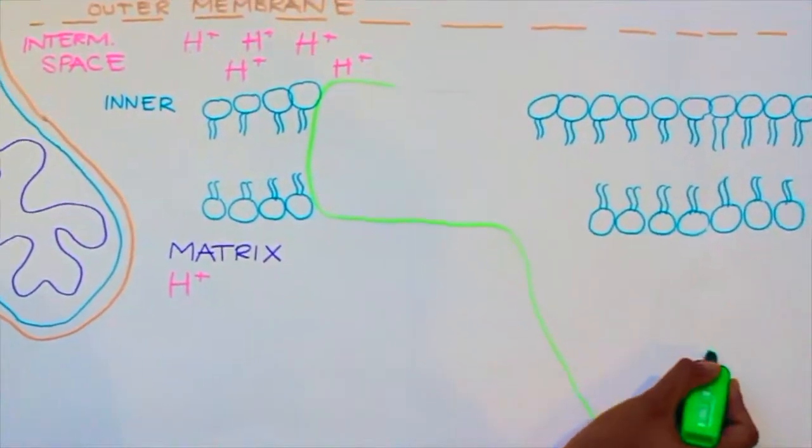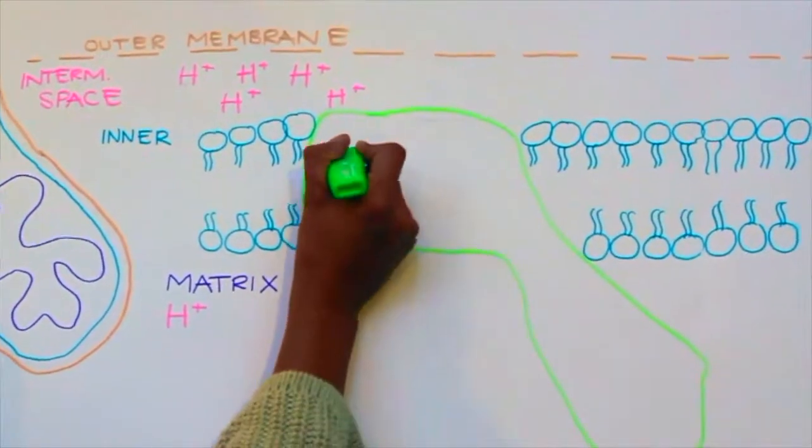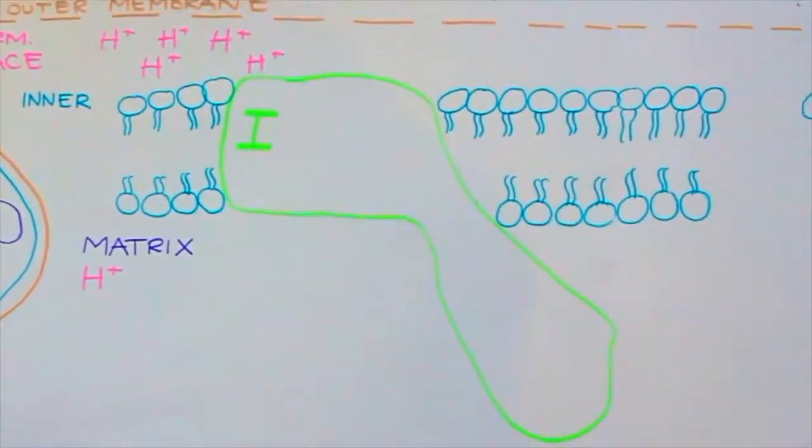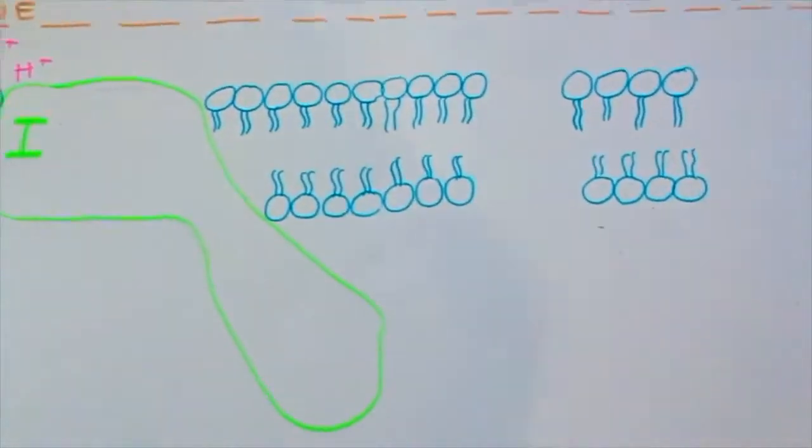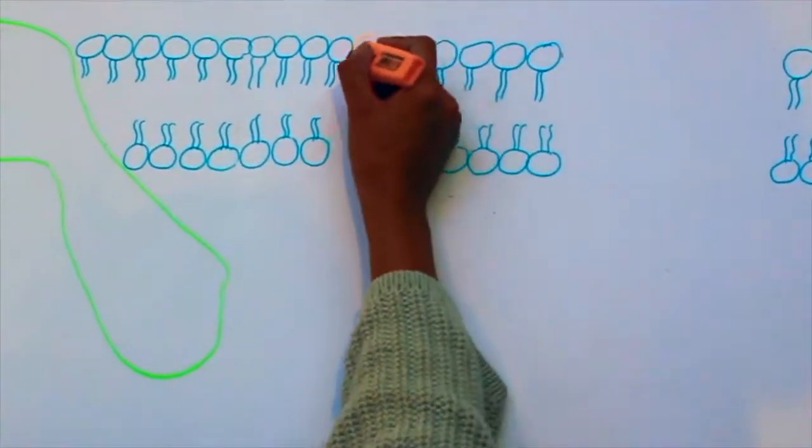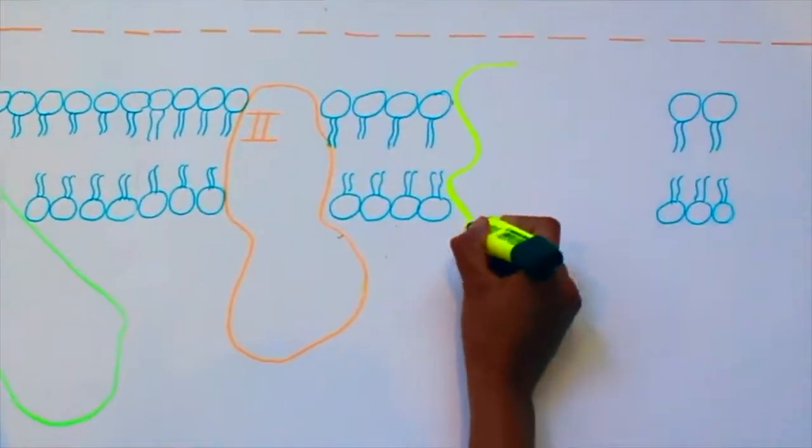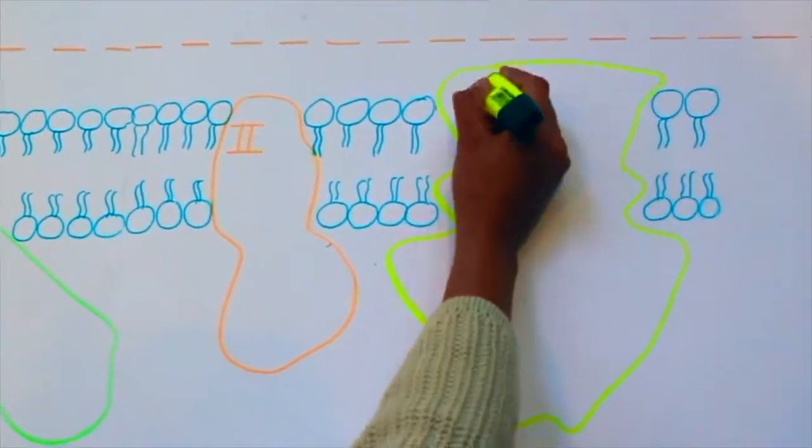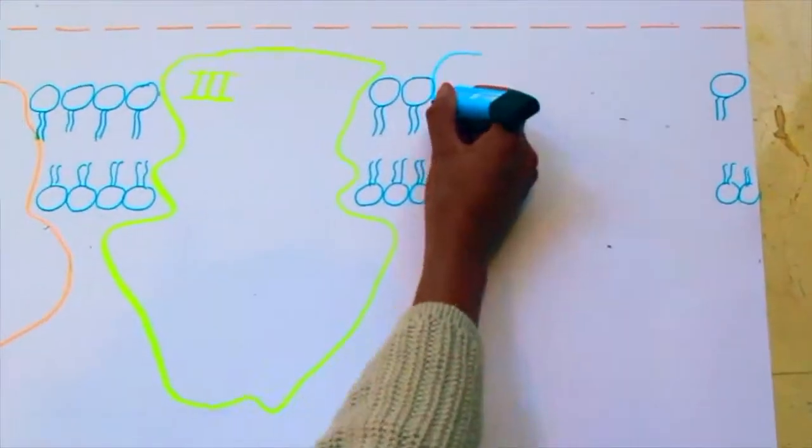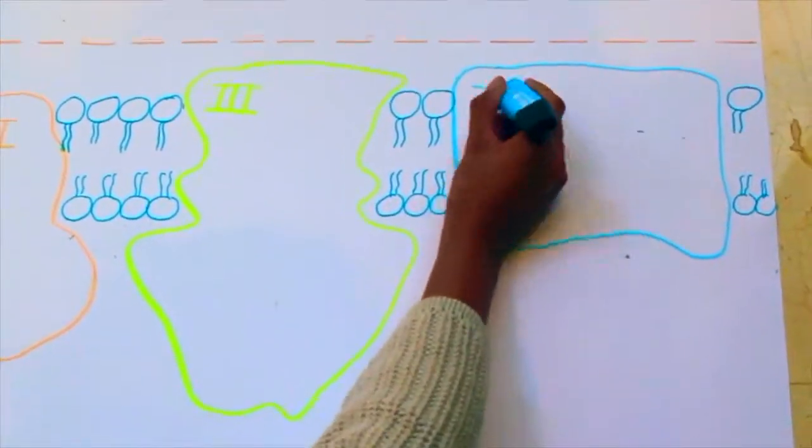In the inner mitochondrial membrane, we have the electron transport chain. We have complex 1, which is the NADH dehydrogenase. We have complex 2, called succinate dehydrogenase. Complex 3, which is cytochrome C oxidoreductase. And complex 4, cytochrome C oxidase.